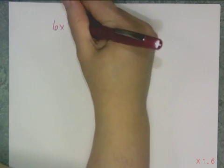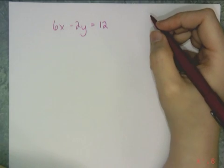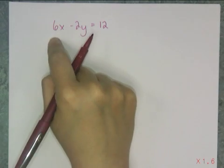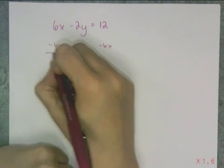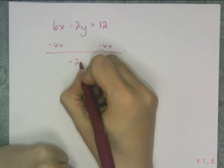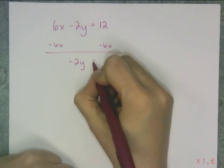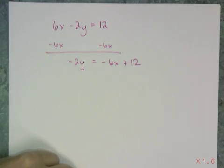So if I have 6x minus 2y equals 12 and I want to convert that into calculator ready format, I have to get this in the y equals format. First off, in the y equals format, I don't want the x on the same side as the y, so I'm going to subtract off 6x from both sides and I get negative 2y. Remember from equation solving that that negative stays there, and I get negative 6x plus 12.